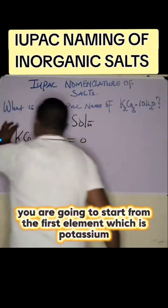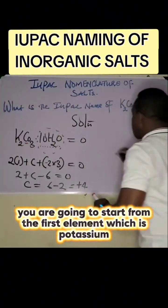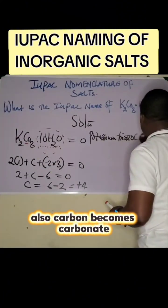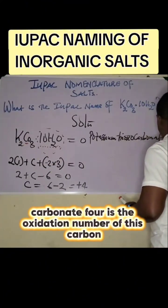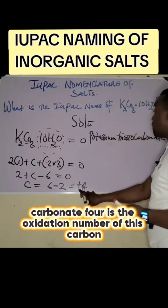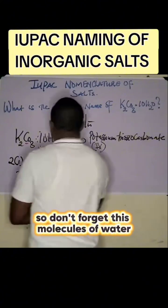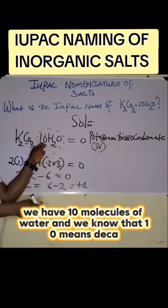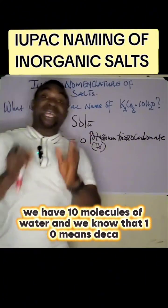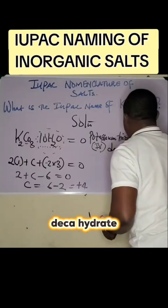The IUPAC name of this compound: we start from the first element which is potassium. Carbon becomes carbonate. Four is the oxidation number of this carbon, so we put it in parentheses in Roman numerals. Don't forget these molecules of water. We have 10 molecules of water, and 10 means deca, decahydrate.